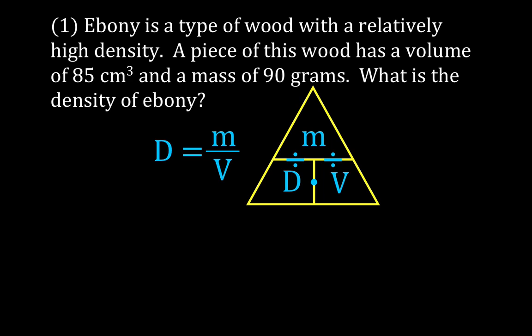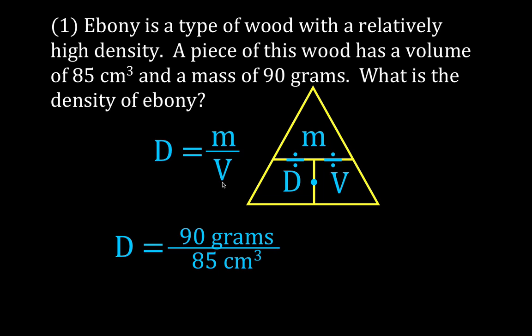Ebony is a type of wood with a relatively high density. This piece of ebony has a volume of 85 cm³ and a mass of 90 grams. Using density equals mass divided by volume: 90 divided by 85 gives 1.06 grams per cm³. This wood has a density greater than 1, meaning it is more dense than water, so this type of wood will actually sink in water.